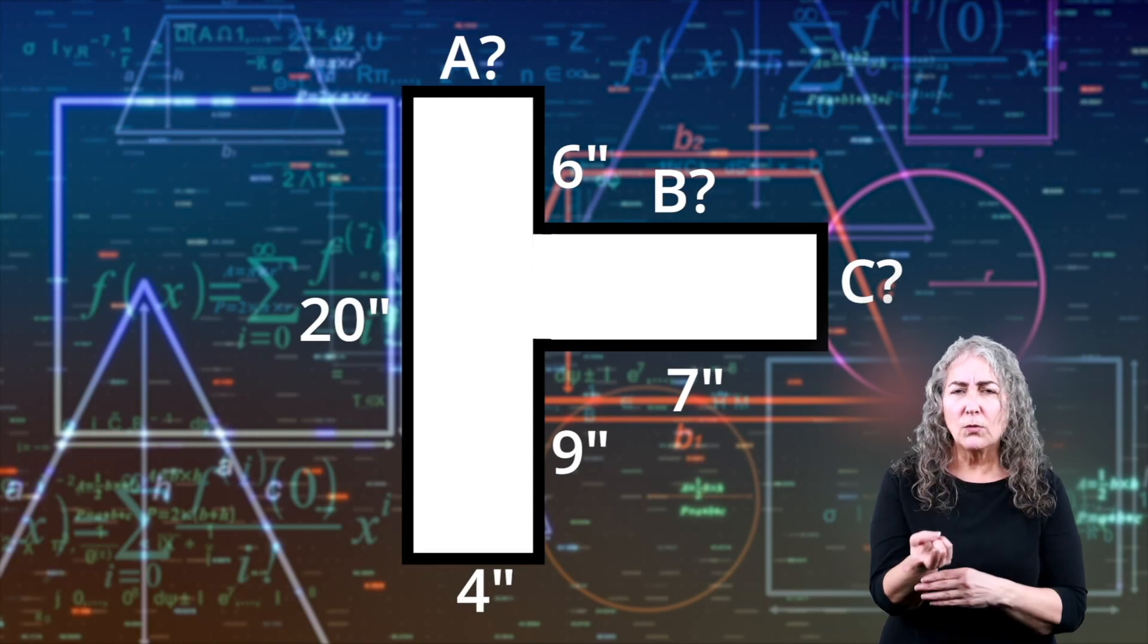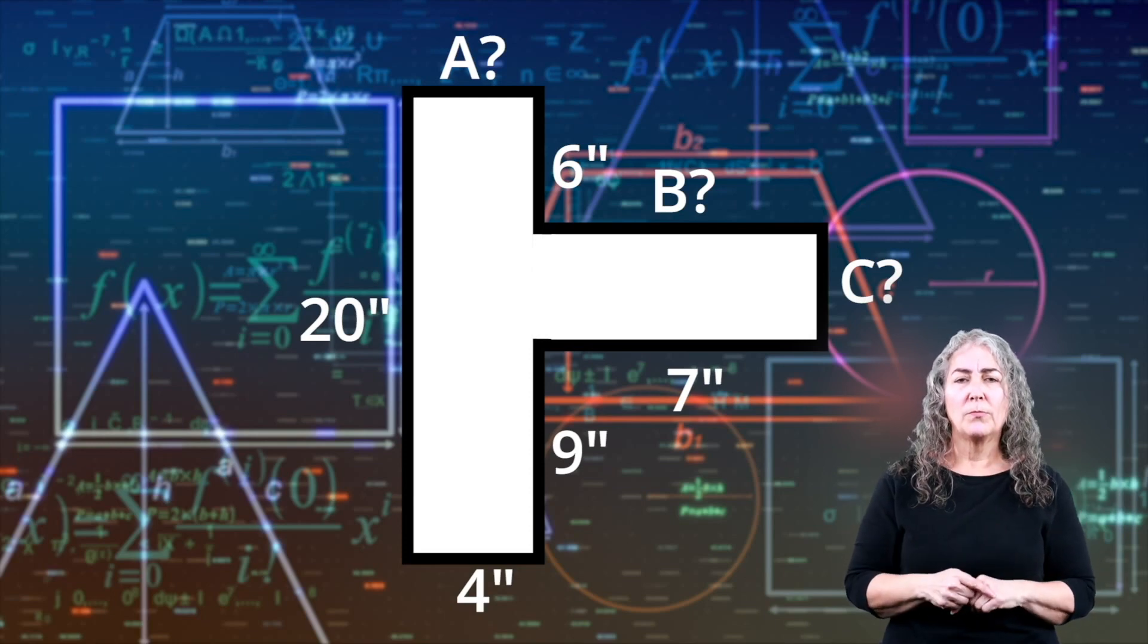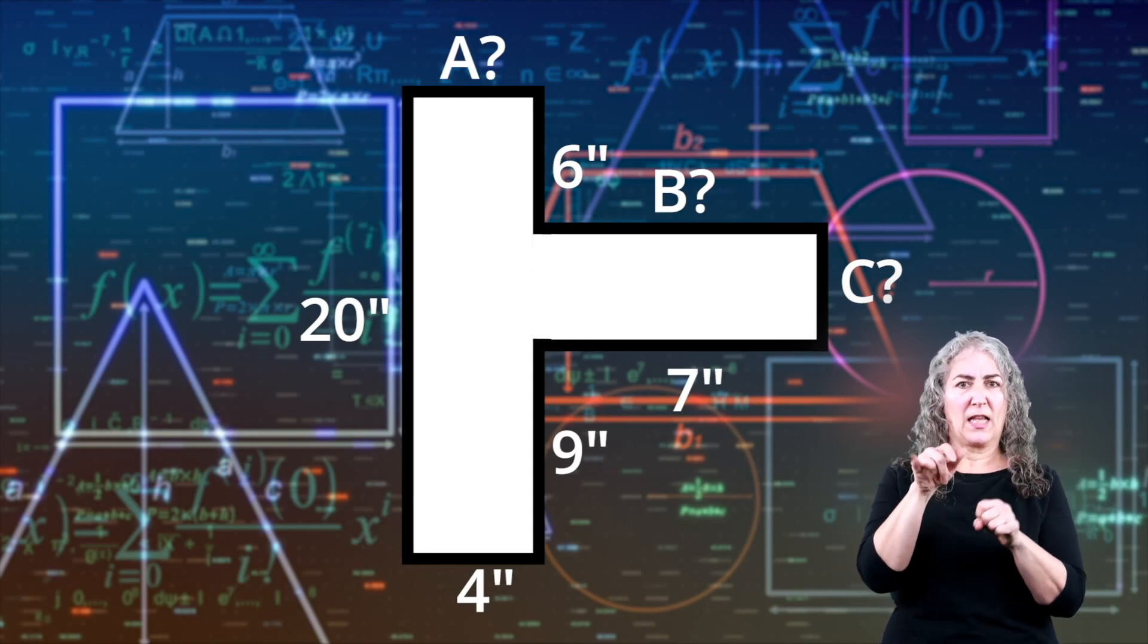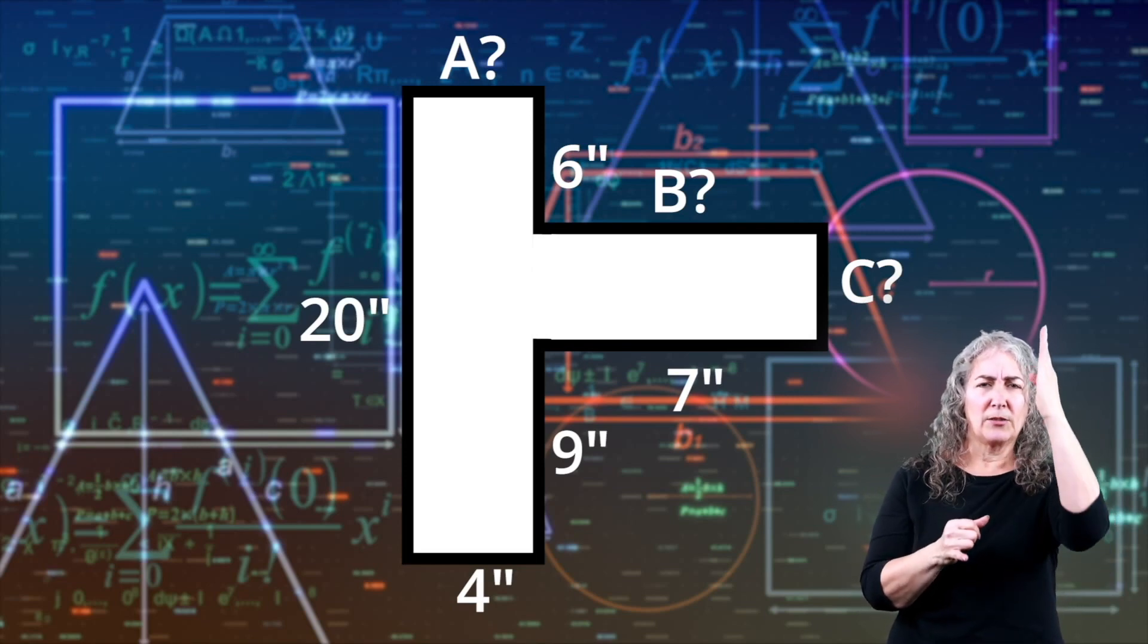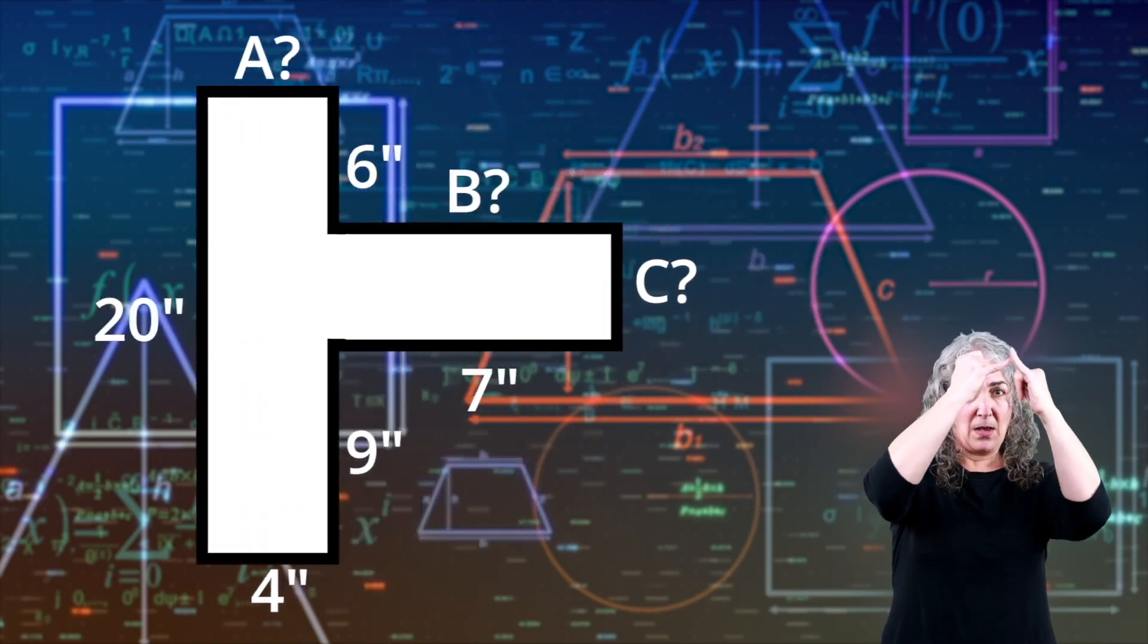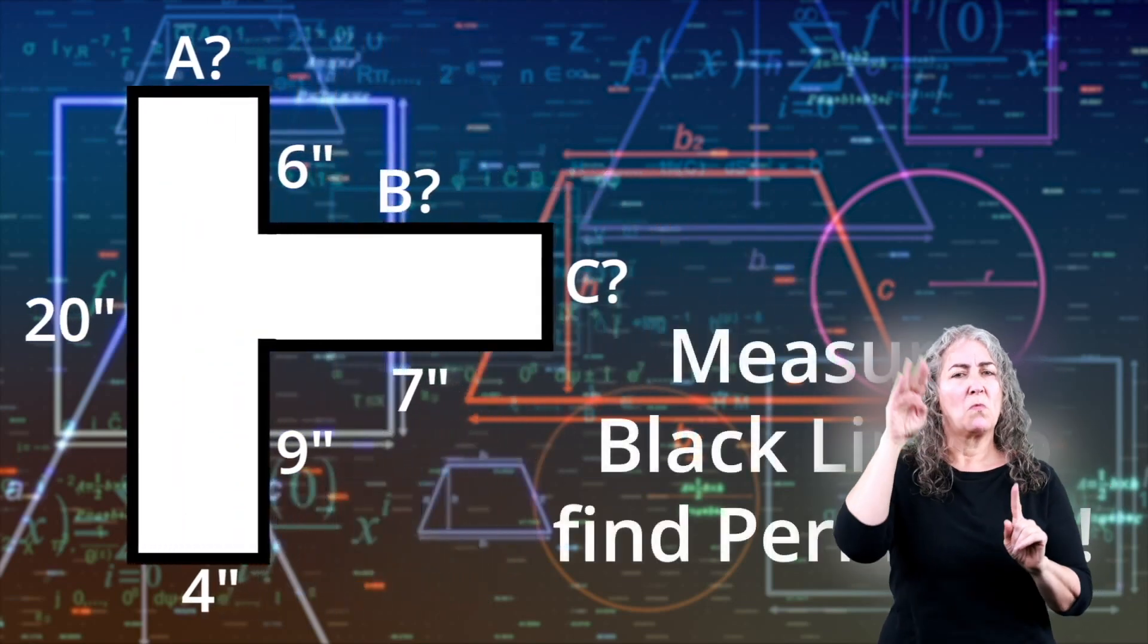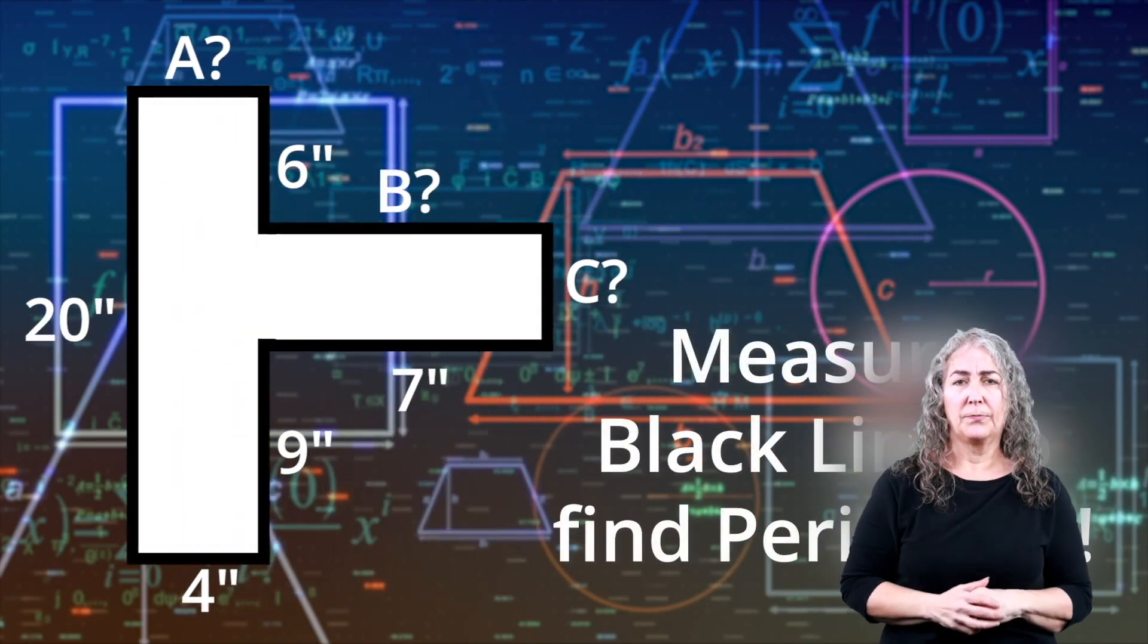If you look closely, you'll see that there are actually two rectangles and one square that make up the shape. To find the perimeter of this shape, you just have to measure the outside of the entire shape. See the black line that goes around the whole thing? If we know the length of that line, we can figure out the perimeter.